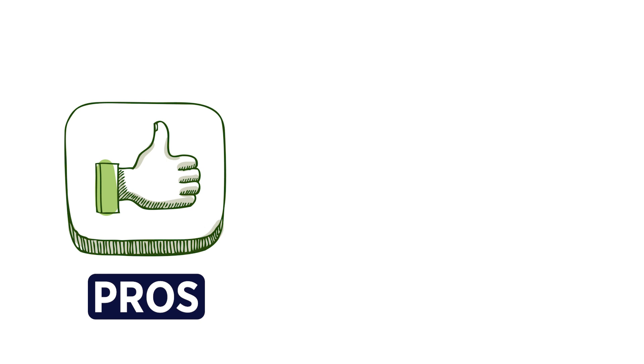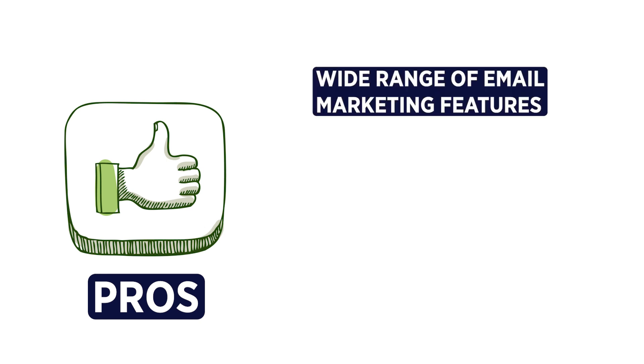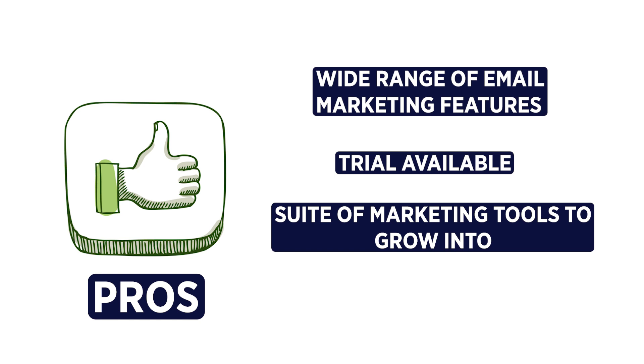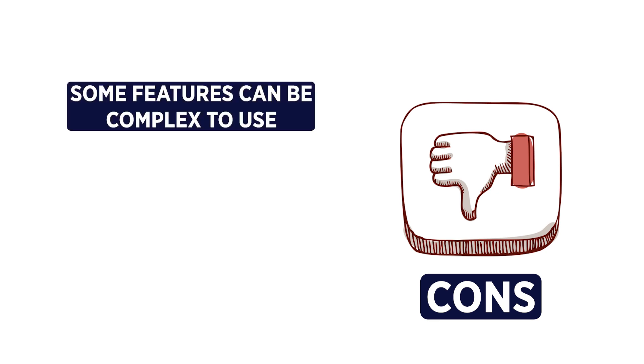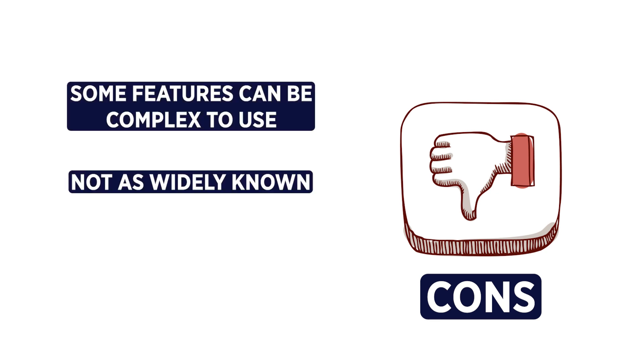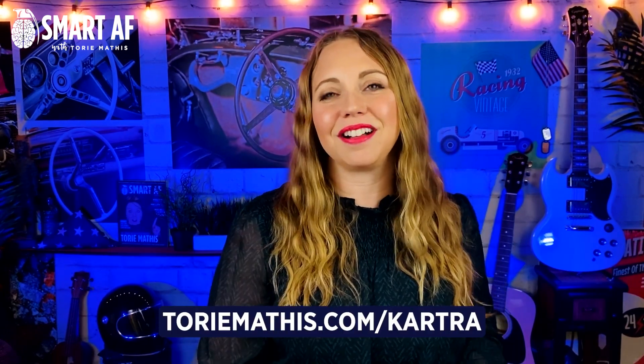Some pros of Kartra: it has a wide range of marketing features that automatically work together, a trial is available, and there is a full suite of marketing tools for you to grow into, including a lot of advanced features. Some cons: some features can be a little bit complex to use, it is not as widely known so it may not have as much community support, and it can be a little buggy at times. Kartra pricing starts at $79 a month, and you can get an extended 30-day trial at toremathis.com/kartra.